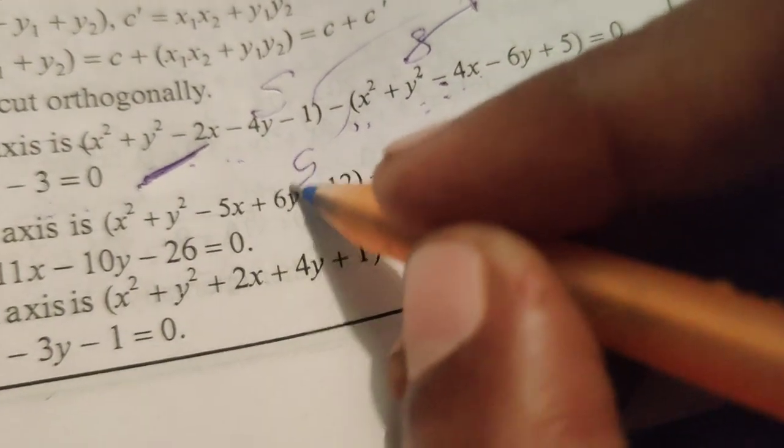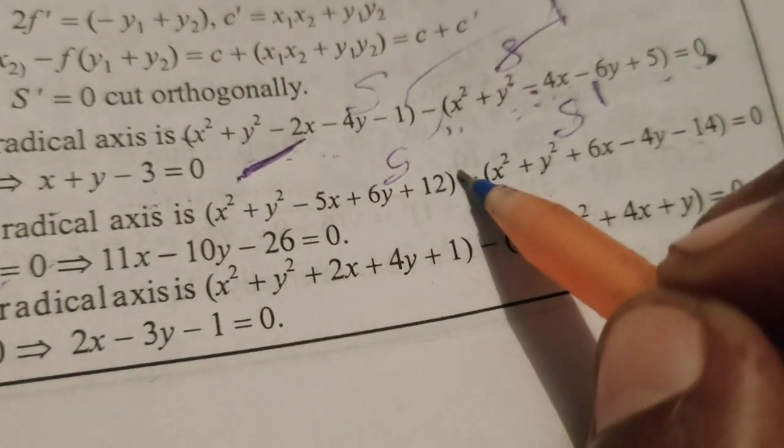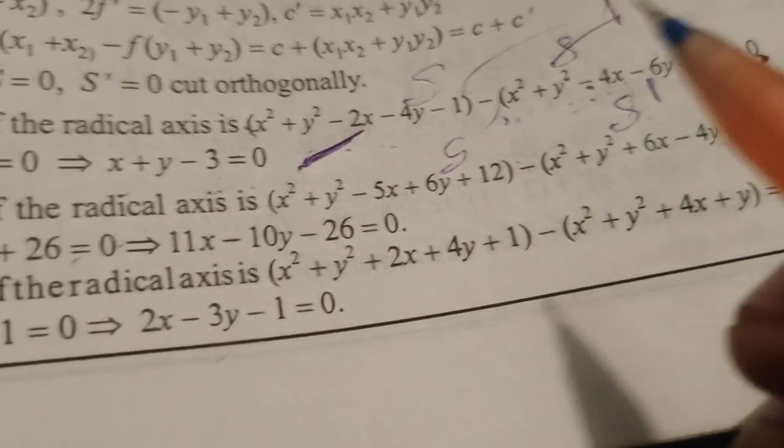considered S, S dash, to find the equation of the radical axis, the formula is S minus S dash equals to 0.